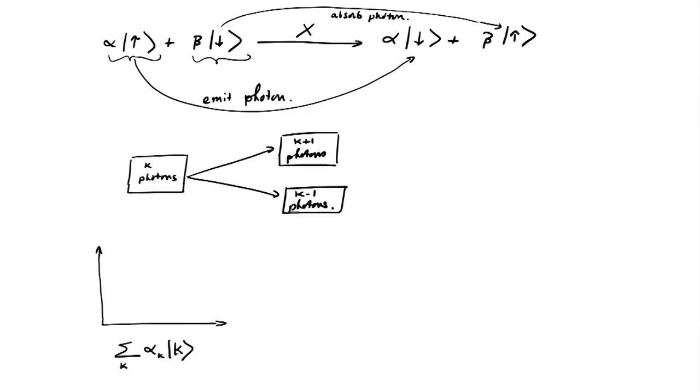So it has k photons, but it's in a superposition of k photons. So if you plot k versus alpha sub k, then it's some sort of a Gaussian superposition. Okay? And so this is our, this is the state of our field as we are applying to the single qubit.